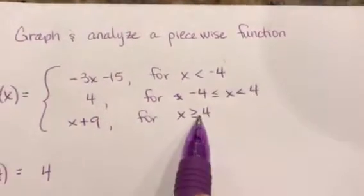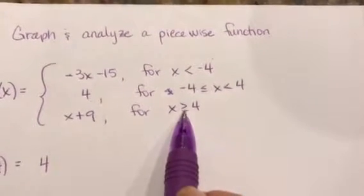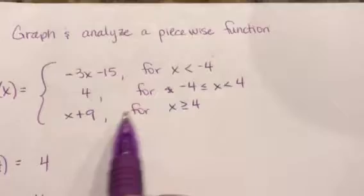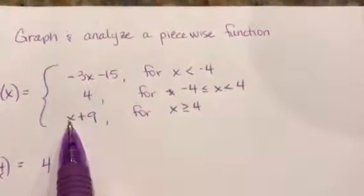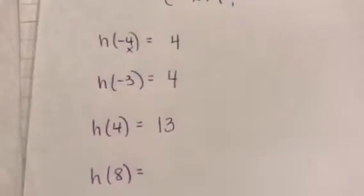Here it wants h of 4. So look, here's a 4 here, and here's a 4 here. So I'm like, oh my gosh, which one do I use? Well, it has to be this one, because this is where it equals 4. So I'm going to use this function. So plug your 4 in right there. 4 plus 9 is 13. So what comes out is my answer. So that's 13. Make sure it's clear.